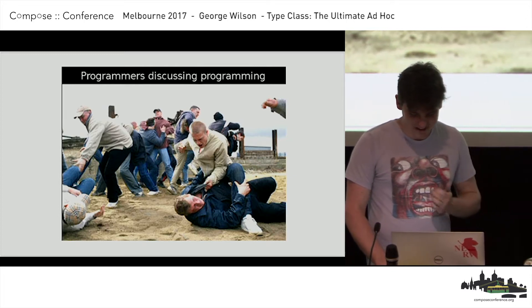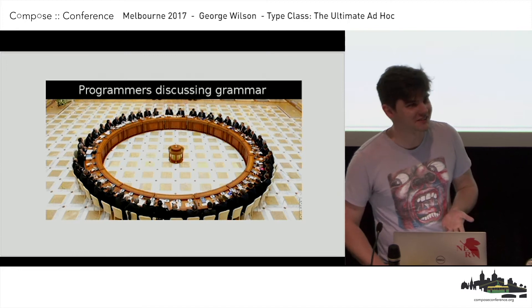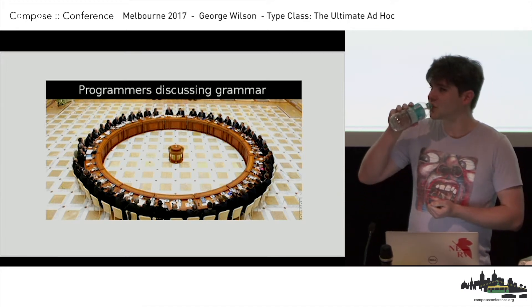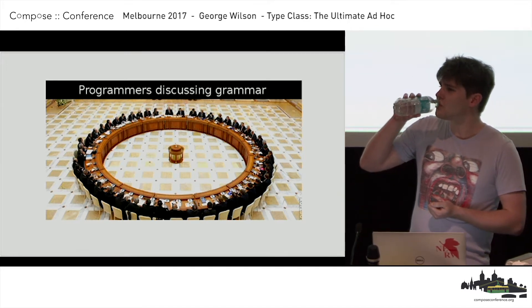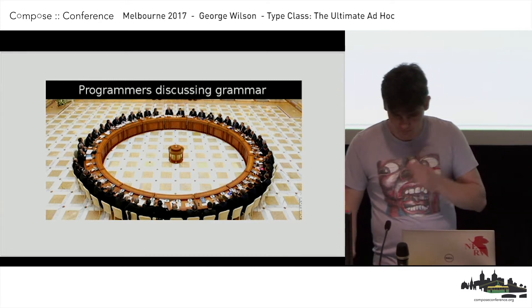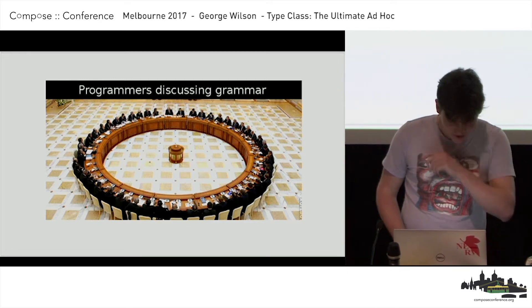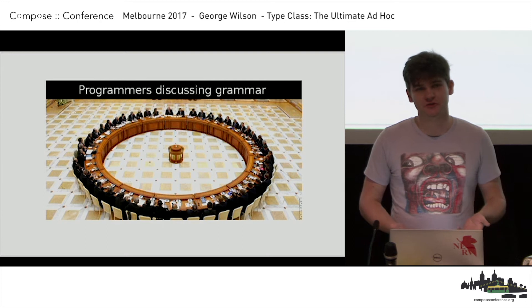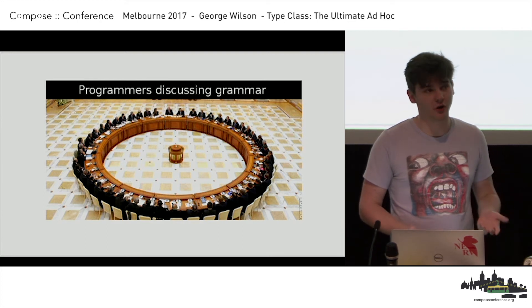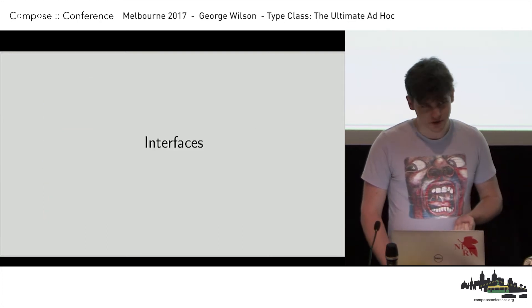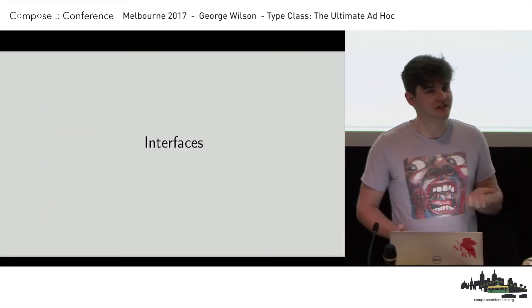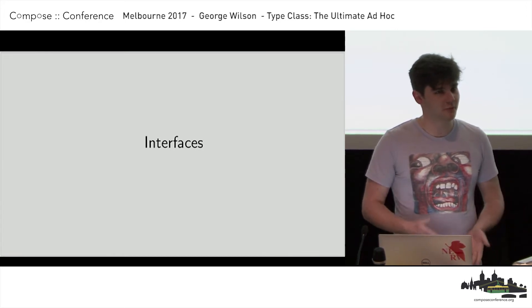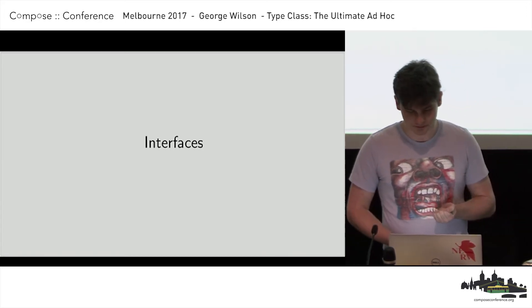But it turns out Twitter can be useful. So now let's look at some language features from different languages which give us ad hoc polymorphism. The first one we'll look at is interfaces, which are found in Java, C#, or many similar languages.